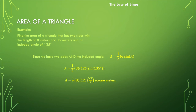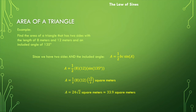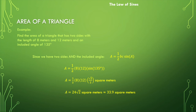Simplifying the trig part: sine of 135 degrees equals square root of two over two. Then crunching the numbers: half of 8 is 4, and 4 times 12 is 48, and half of 48 is 24 — giving us 24 times the square root of 2 square meters. Our calculator gives a decimal approximation of about 33.9 square meters. Both representations are valuable: the exact form is precise, and the decimal approximation — about 34 square meters — is easier to relate to.